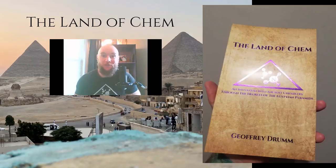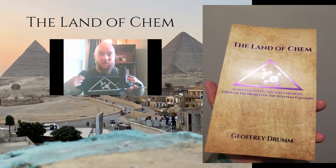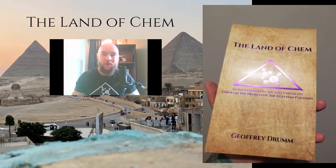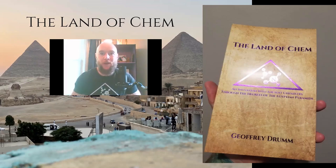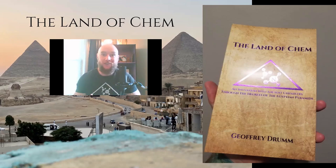A quick reminder that limited first edition print copies of the Land of Chem are now available at www.thelandofchem.com. I also have second degree t-shirts now available. The logo featured on the t-shirts is a 45-45-90 degree triangle, which represents the Red Pyramid, and the molecules inside the structure are symbolic of the chemical that was being produced inside that pyramid. Please subscribe to the Land of Chem YouTube channel, like this video, share it with your friends, and help me get this material out there.